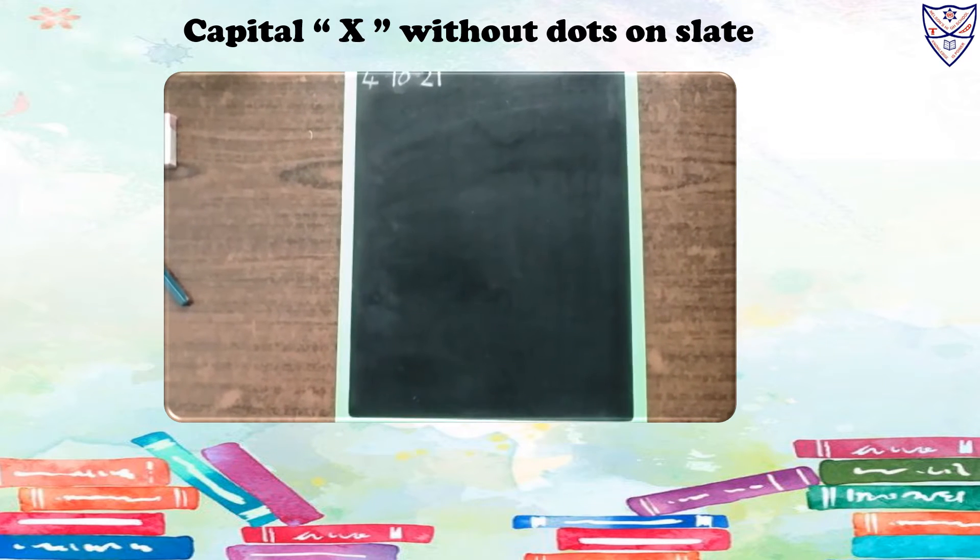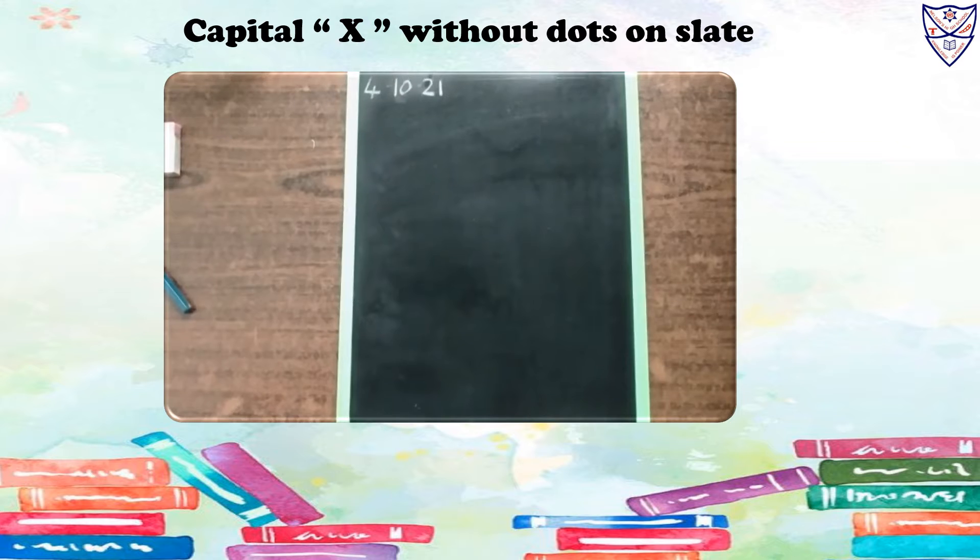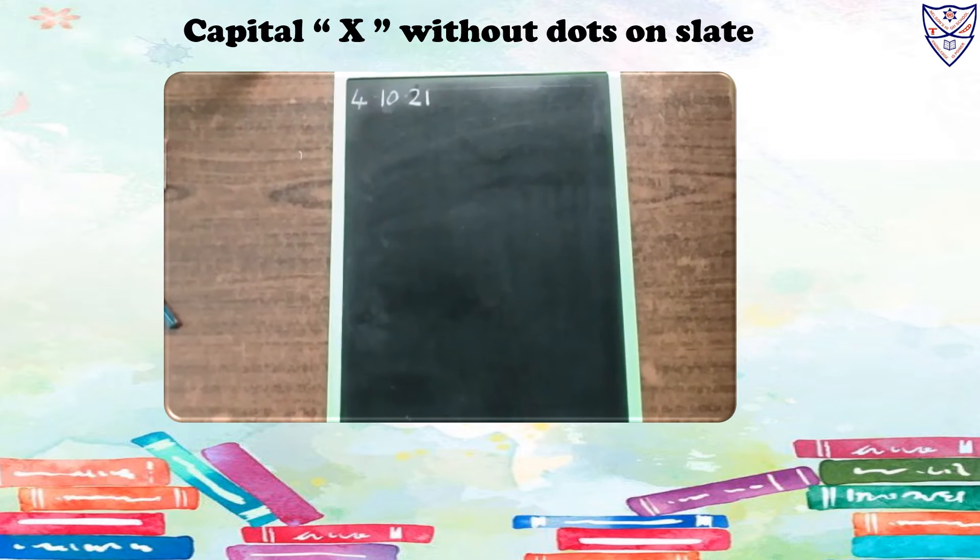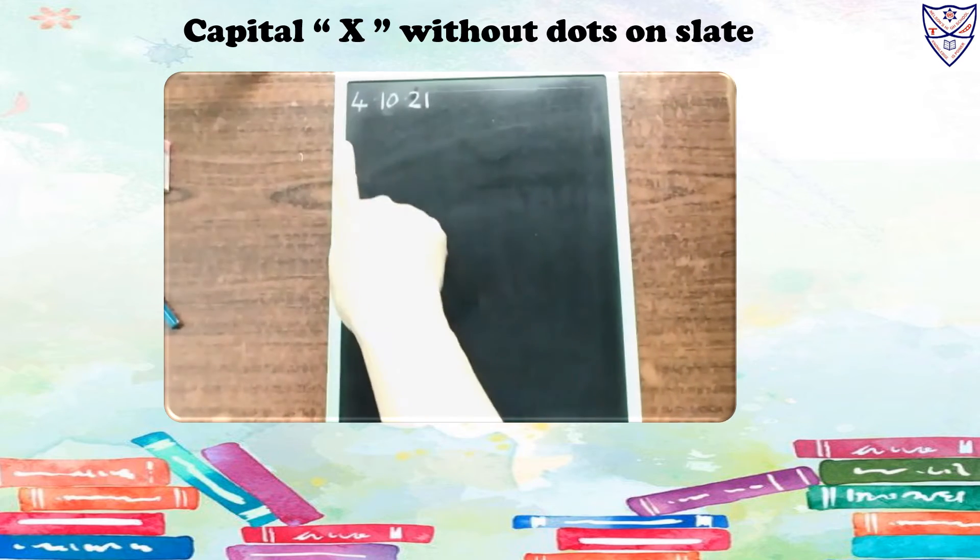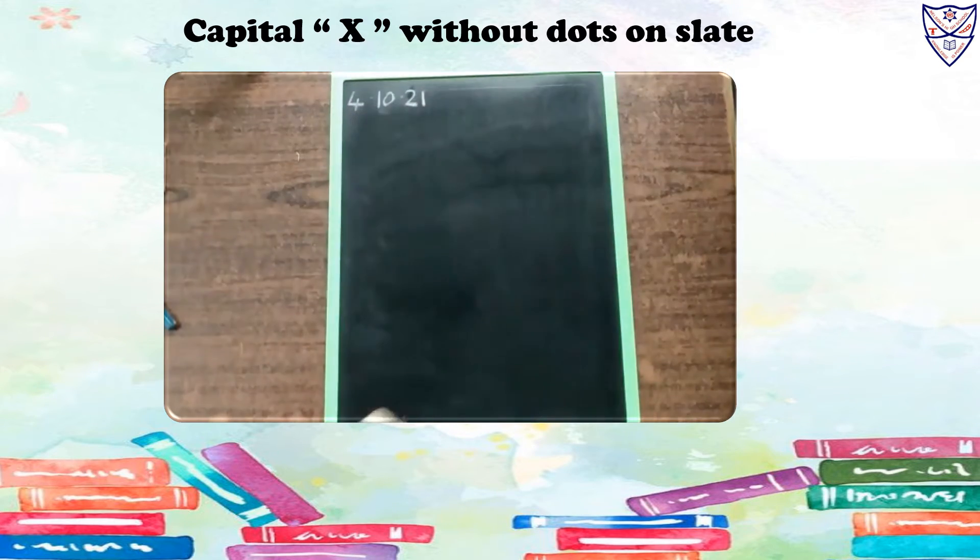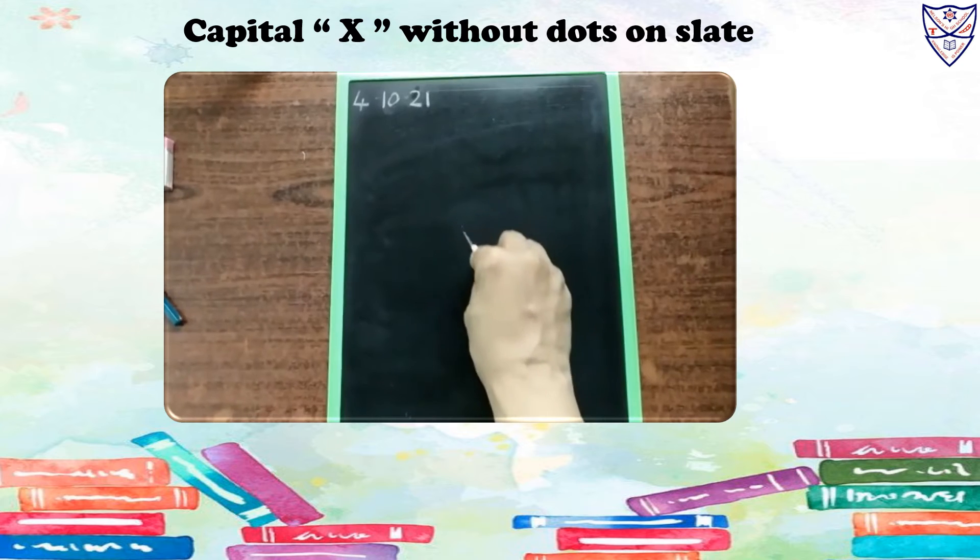We will write capital X with our dots on the slate. So, take out your slate. Parents, please write today's date on the slate. That is 4, 10, 21. And please write capital X.